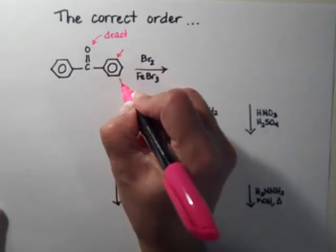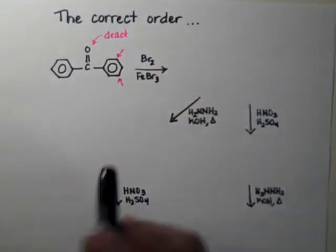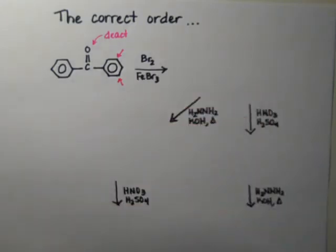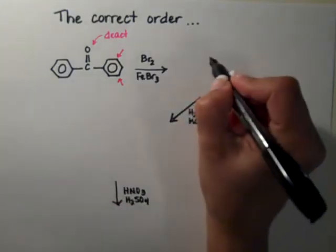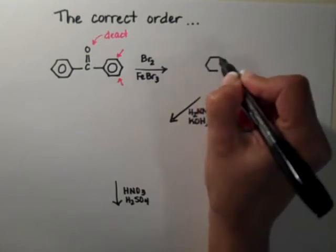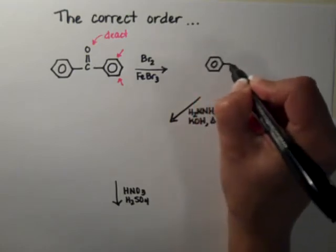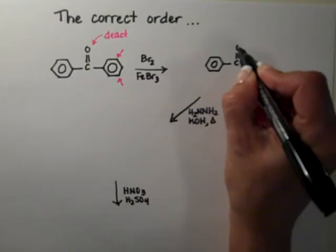So it's pointing to the meta positions. Both meta positions are equivalent so it doesn't make a difference where we put it, and we could have put the bromine on the ring that was on the left side. I'm just going to pick the right side for it.